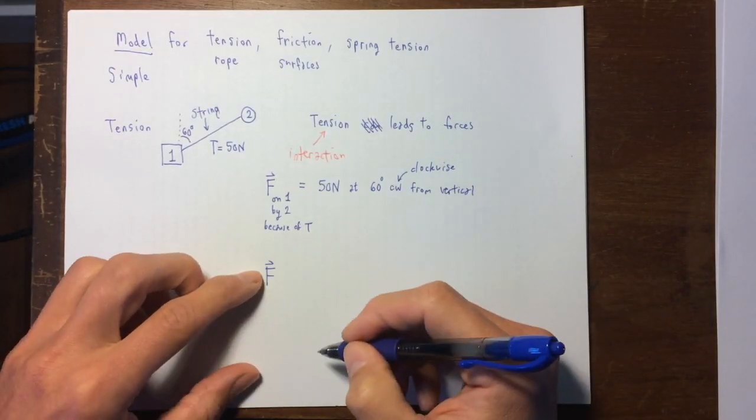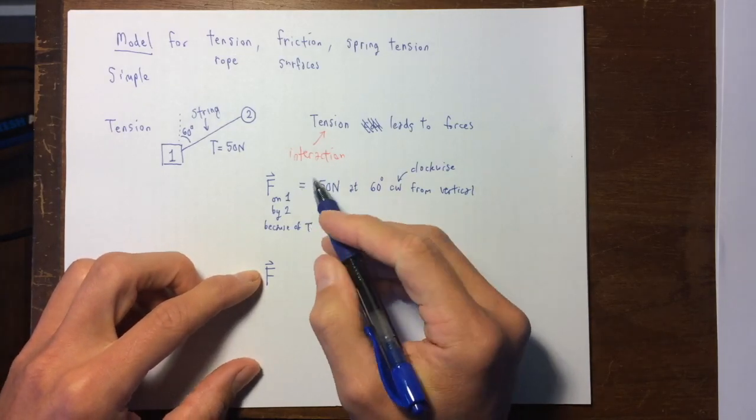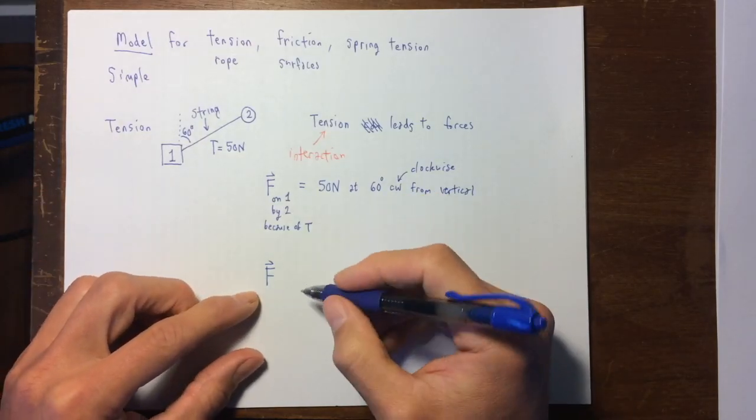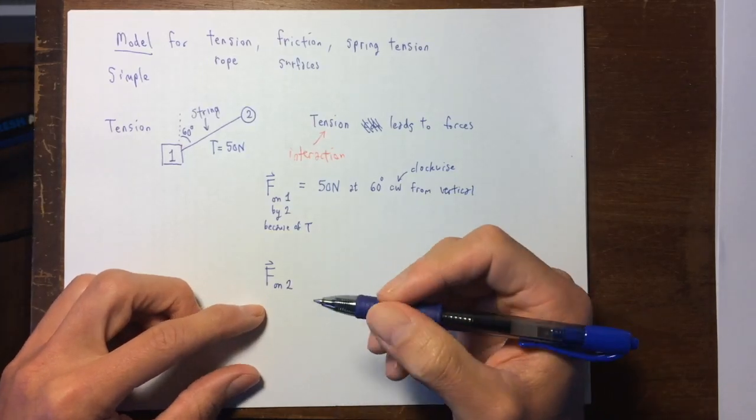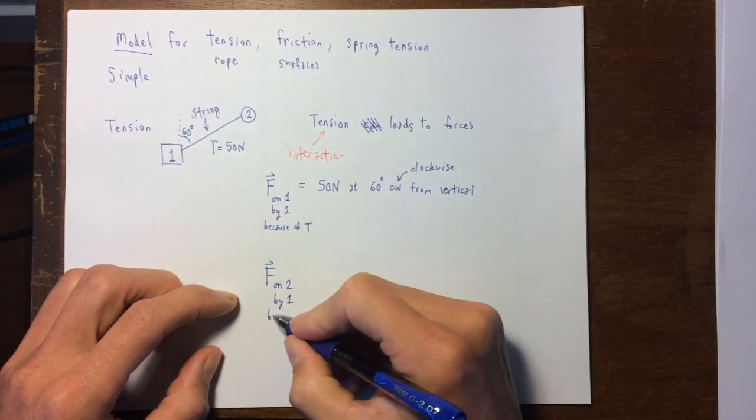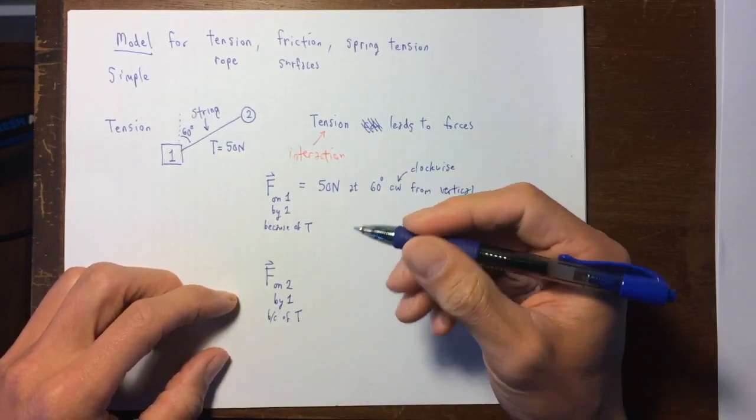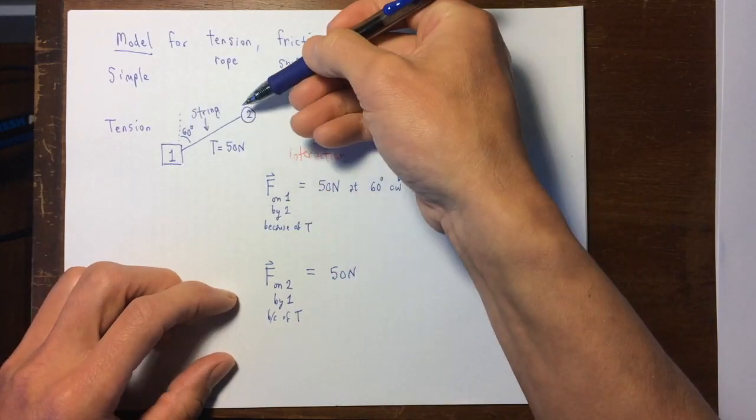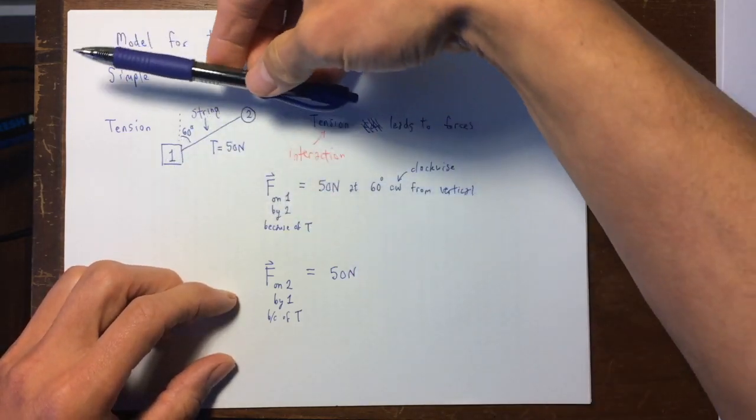There is another force in this single interaction, and you can recall this is just because of Newton's third law, or it's associated with Newton's third law. It is the force acting on the other object on number two by number one because of the tension T in the string, and that force is also 50 Newtons in strength, but it is in the opposite direction.